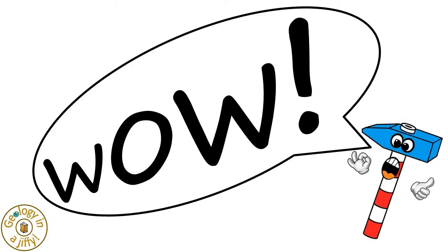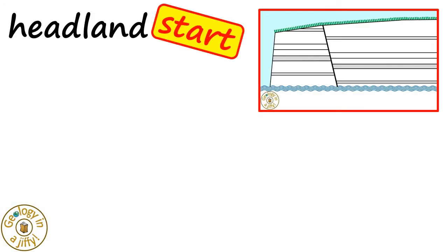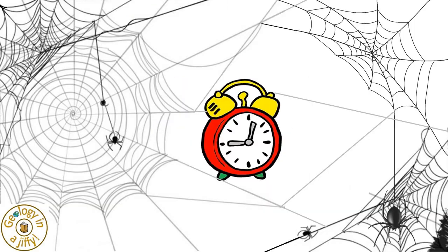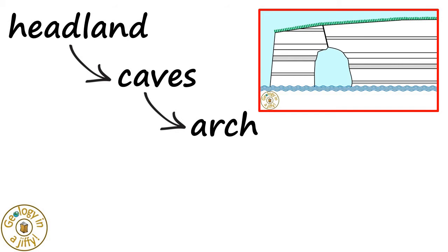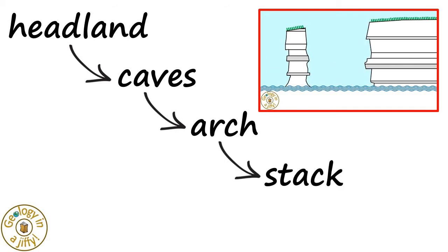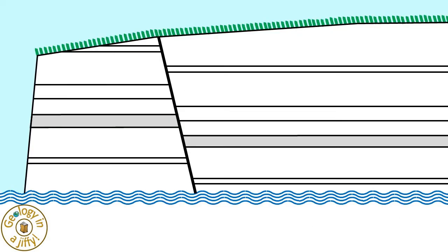Wow! In summary, the process starts with a headland, this weathered and eroded over time, resulting in caves forming, these then growing and merging together to form an arch, which then collapses to form a stack, and consequently a stump. Headland to stump. That's amazing!